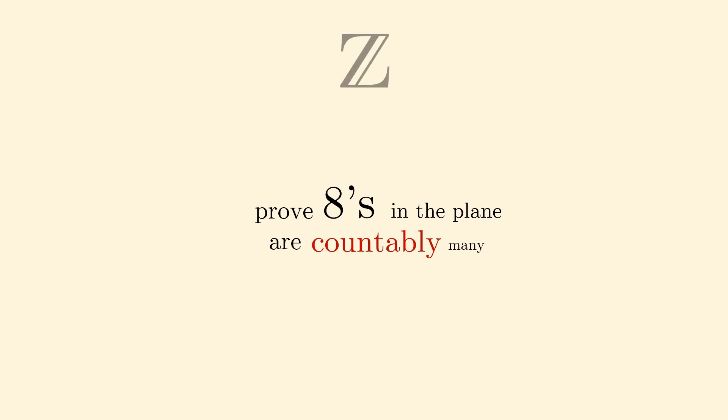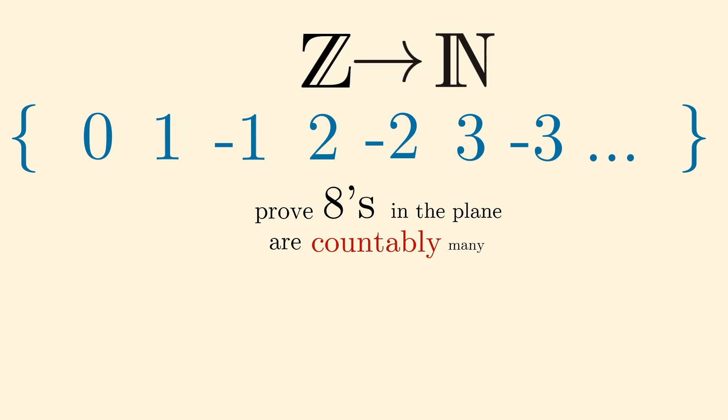For example, the integers are countable since we can systematically count through them. We say there exists a map from the integers to the natural numbers.